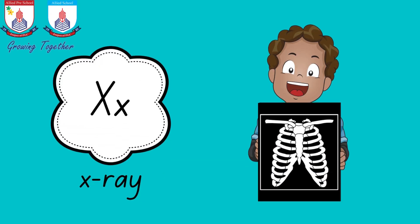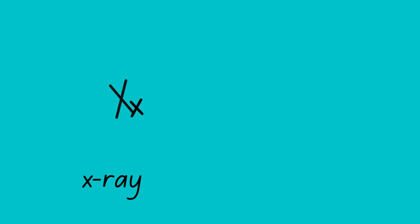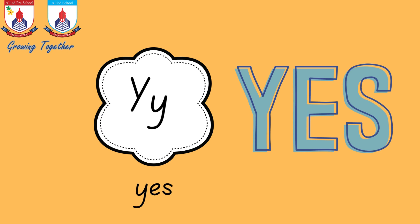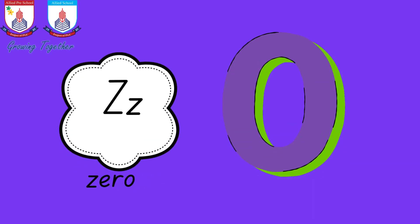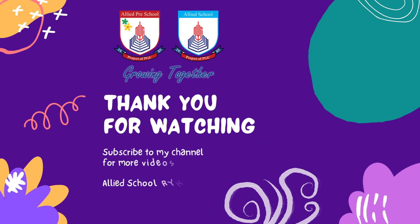Y is for y-y-yes, y-y-yes. Z is for z-z-zero, z-z-zero. Now you know the sounds of all the letters.